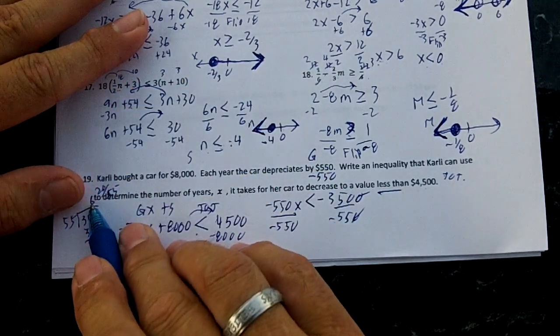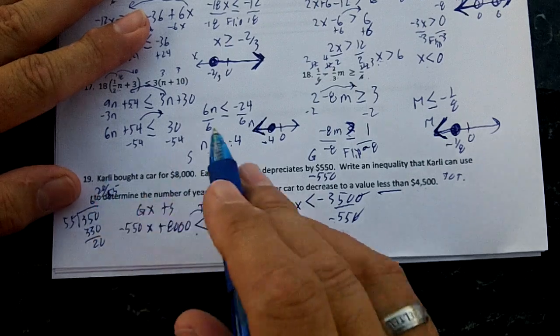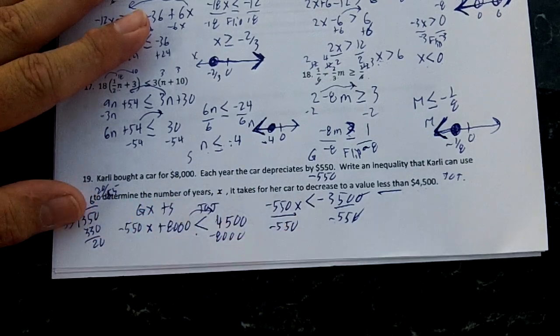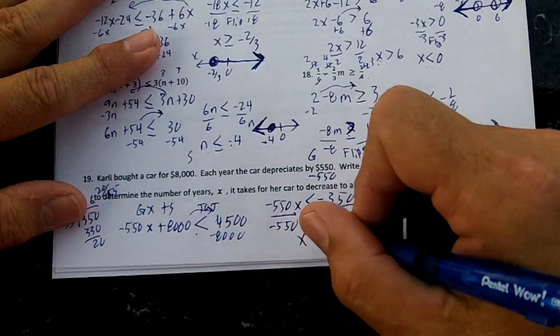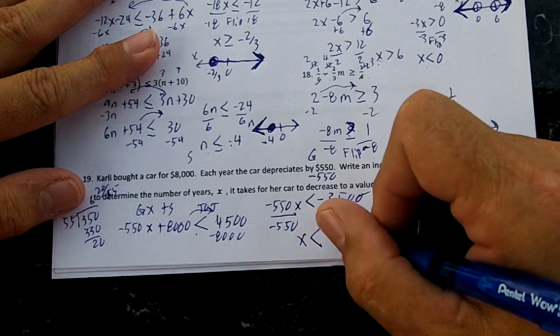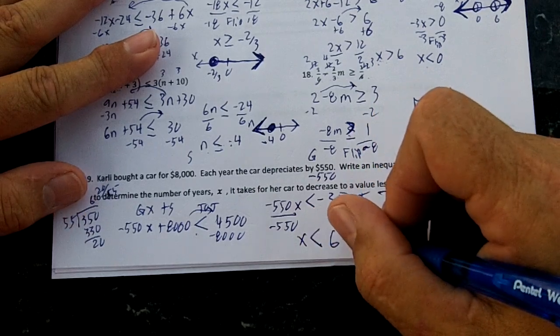In six years, it will be over $4,500. In seven years, it's going to be under. So it's going to take X right here is going to be less than 6 and 20 over 55.